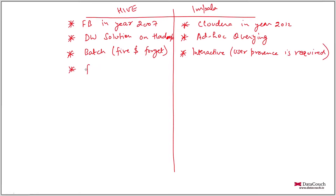Hive is fault tolerant. If something fails during a nightly batch job, it will try to recover by rerunning the failing tasks. Impala is not fault tolerant — this is a very important difference.